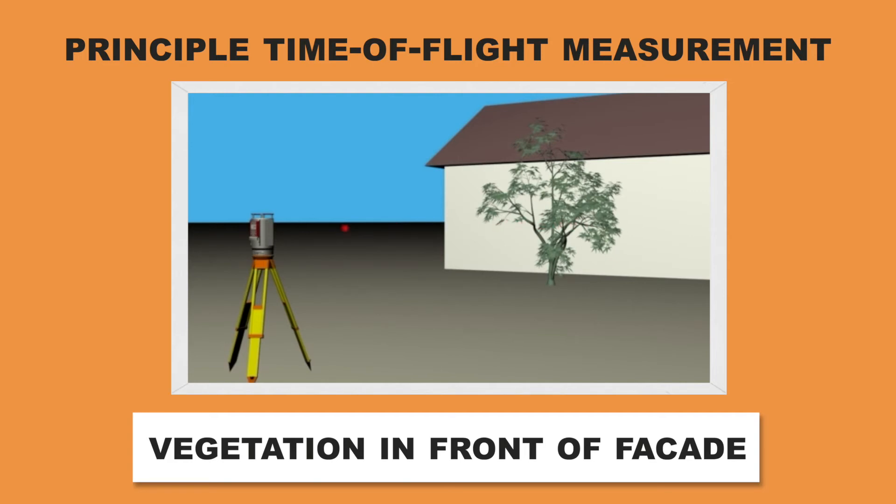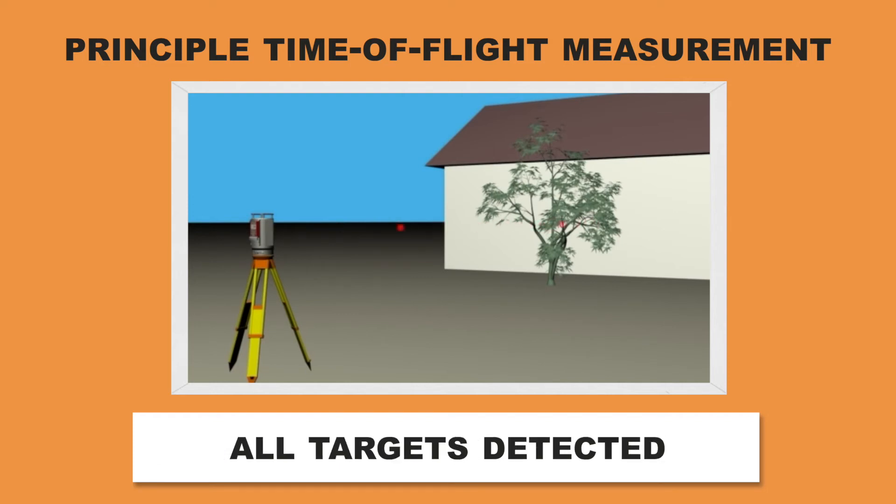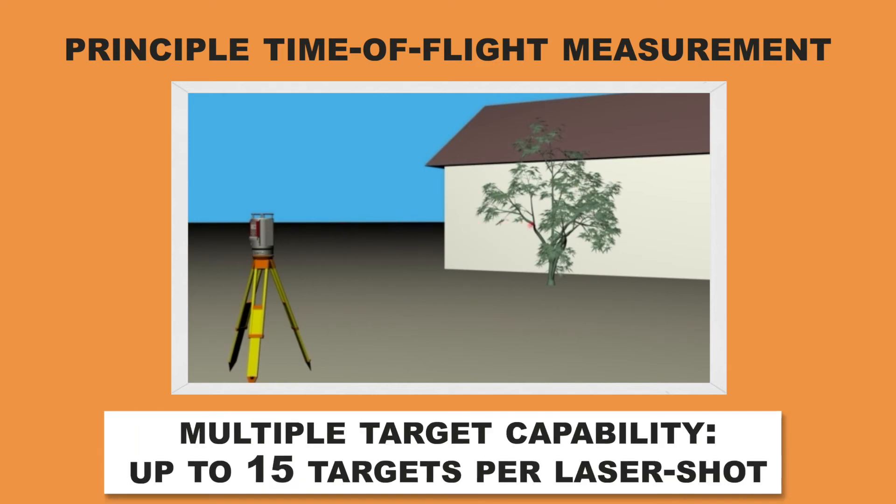In that case, the laser hits several leaves and finally the facade. Our scanners are detecting all these echoes and we are providing multiple target capability, which means we can detect up to 15 targets on a single laser shot.